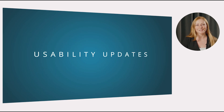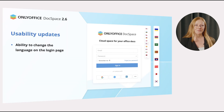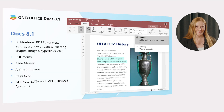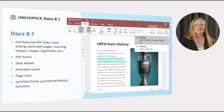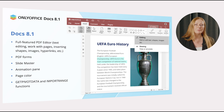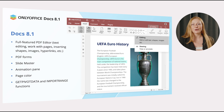For a more comfortable user experience, the following improvements are implemented: an ability to change the language on the login page, and an optimized backup process with less memory consumption. And just a quick reminder — in OnlyOffice DocSpace 2.6 you can use the latest update of the editors, version 8.1, which includes a full-featured PDF editor with text editing, work with pages, inserting shapes, images, hyperlinks, etc., PDF forms, slide master, animation pane, page color support and more.